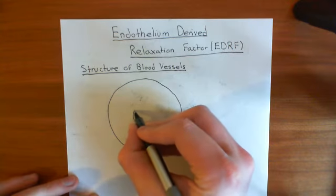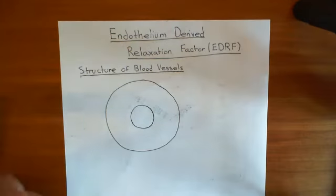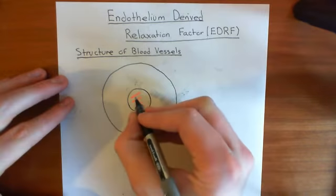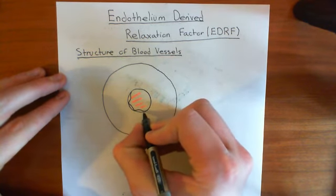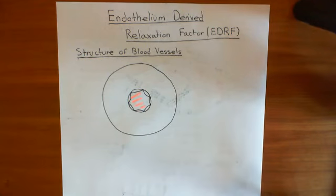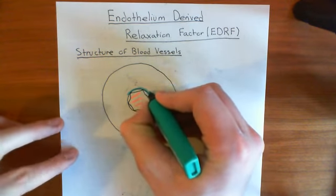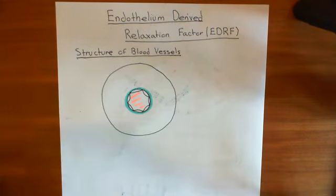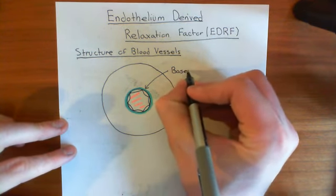The innermost layer lines the lumen of the blood vessel through which the blood is flowing. Lining the lumen of the blood vessel are endothelial cells — you have lots of endothelial cells lining this lumen. Underneath those endothelial cells you have a basement membrane, basically, which is made up of collagen. These two layers — this collagen-based basement membrane on which the endothelial cells sit, along with the endothelial cells themselves — are known as tunica intima.